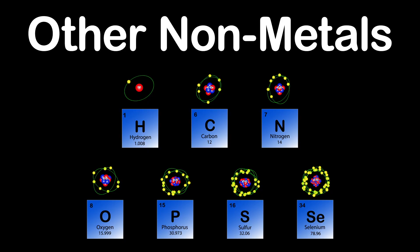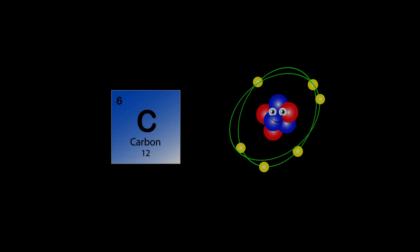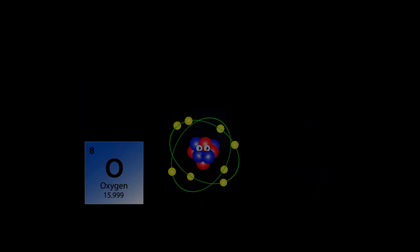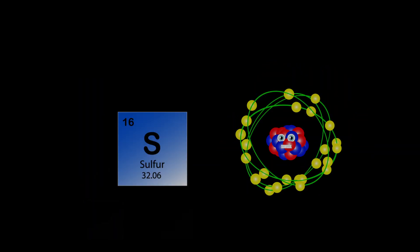There are seven elements in the other non-metals group. We are hydrogen, carbon, nitrogen, oxygen, phosphorus, sulfur, and selenium too.